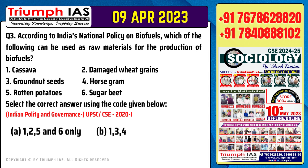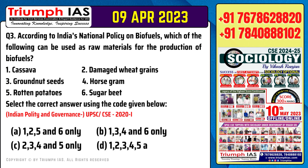Question number 3. According to India's National Policy on Biofuels, which of the following can be used as raw materials for the production of biofuels? Select the correct answer using the code given below. Option 1: 1, 2, 5 and 6 only.